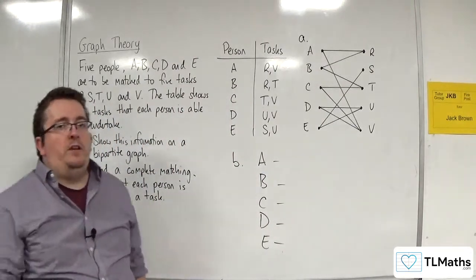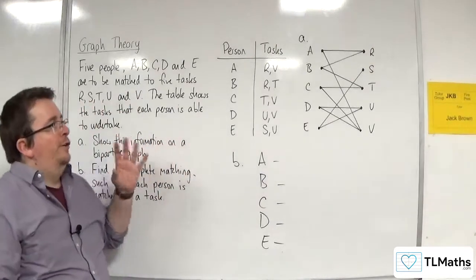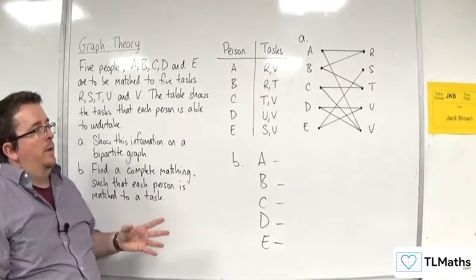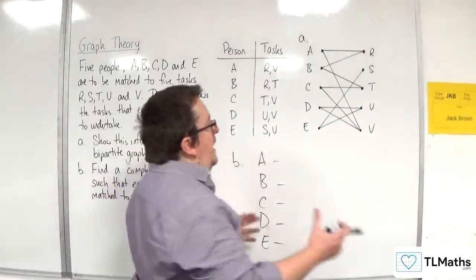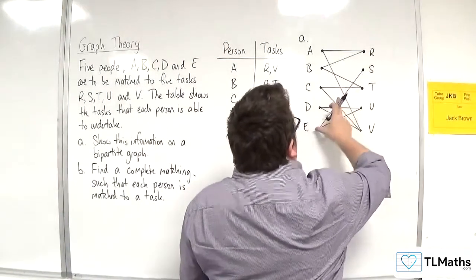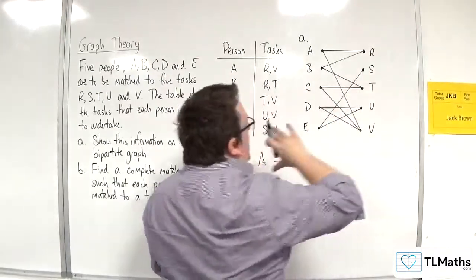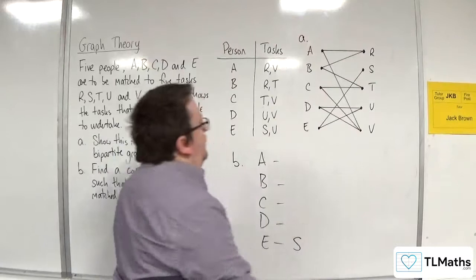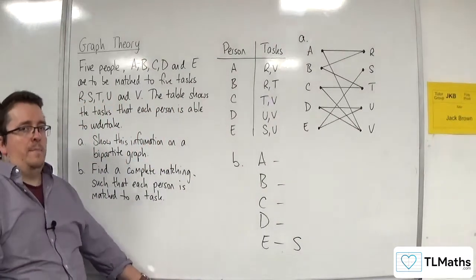The first thing you need to do is look for any task that can only be done by one person. In this case, E can do task S and they're the only one that can do that. So E has to do S in order to make a complete matching.